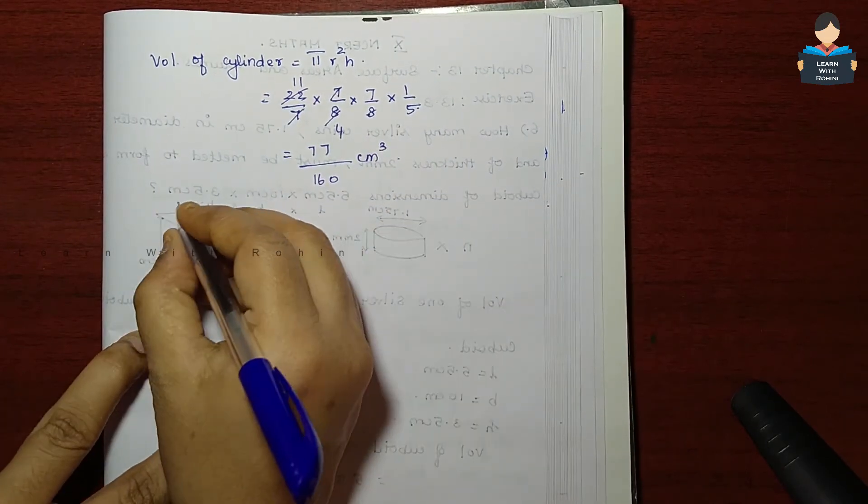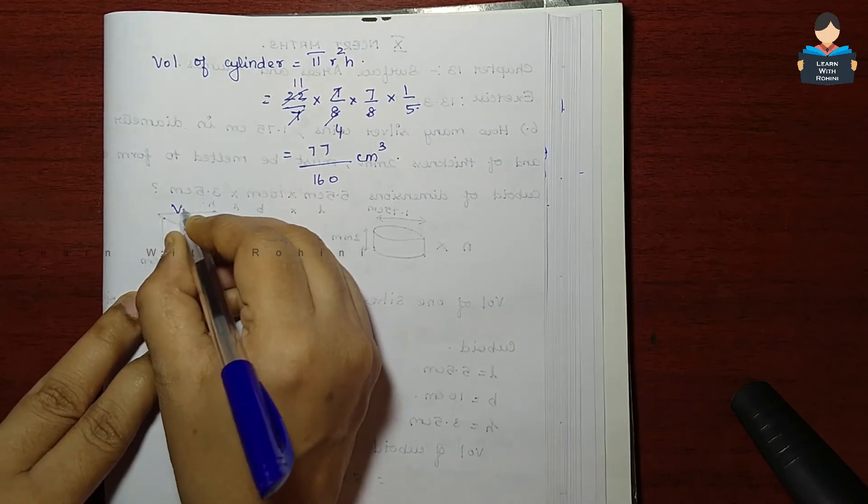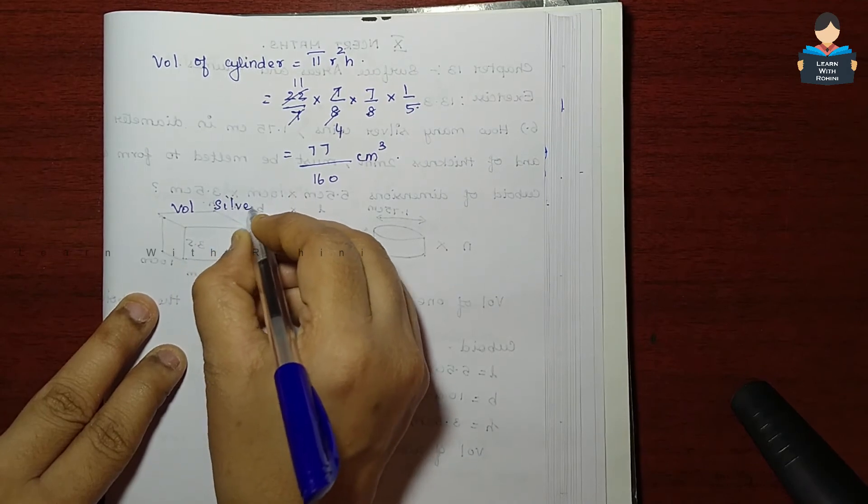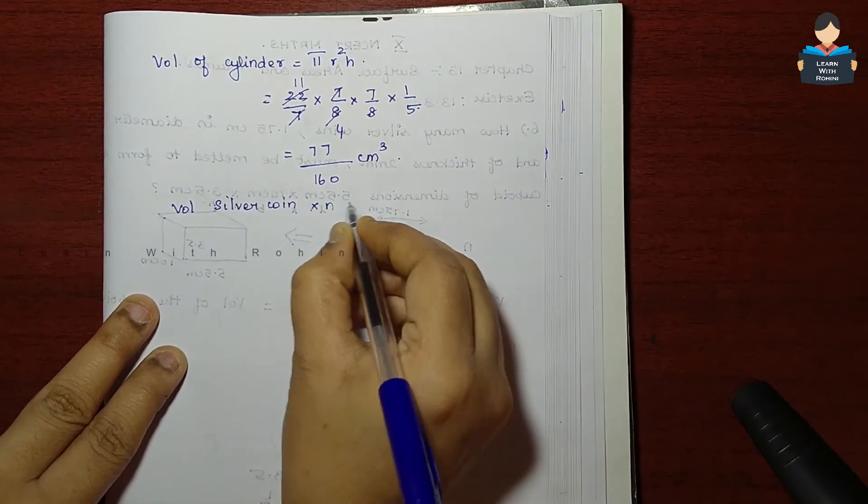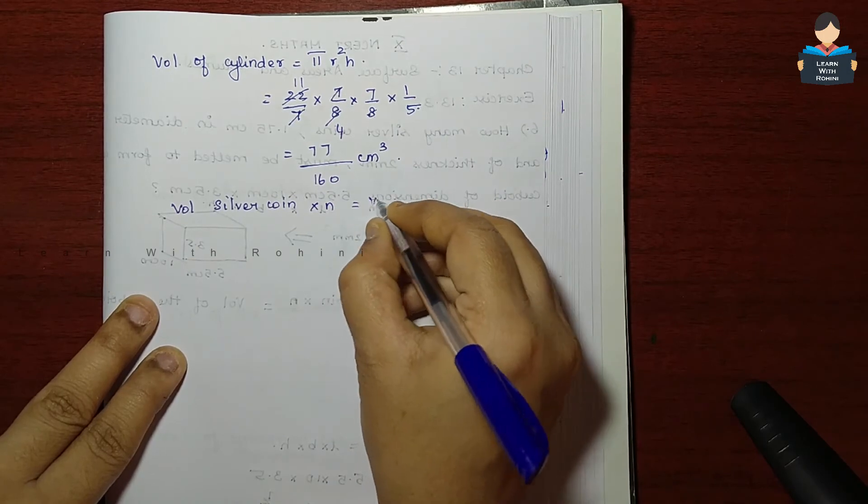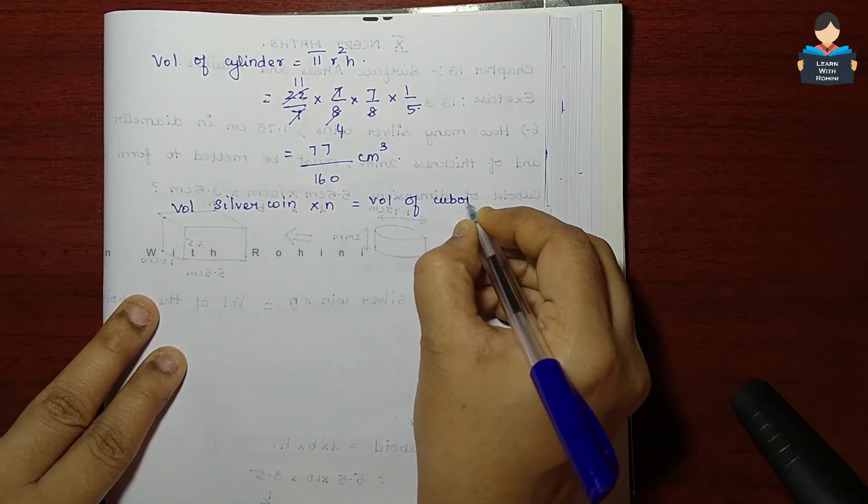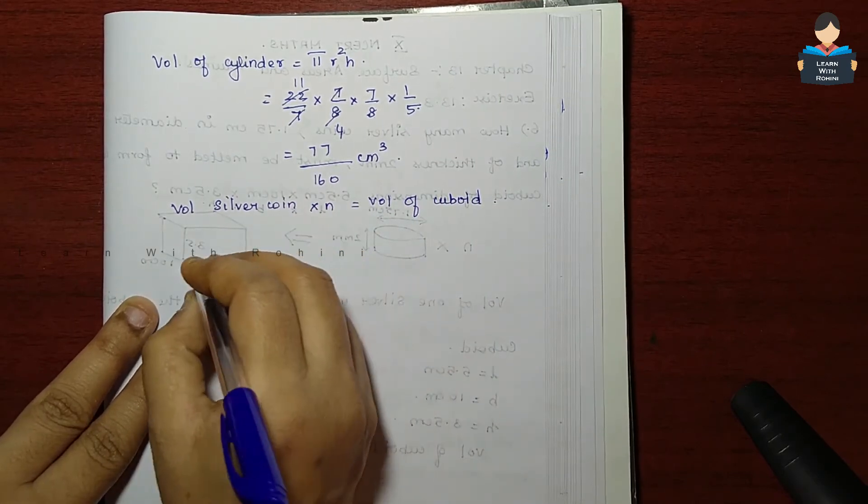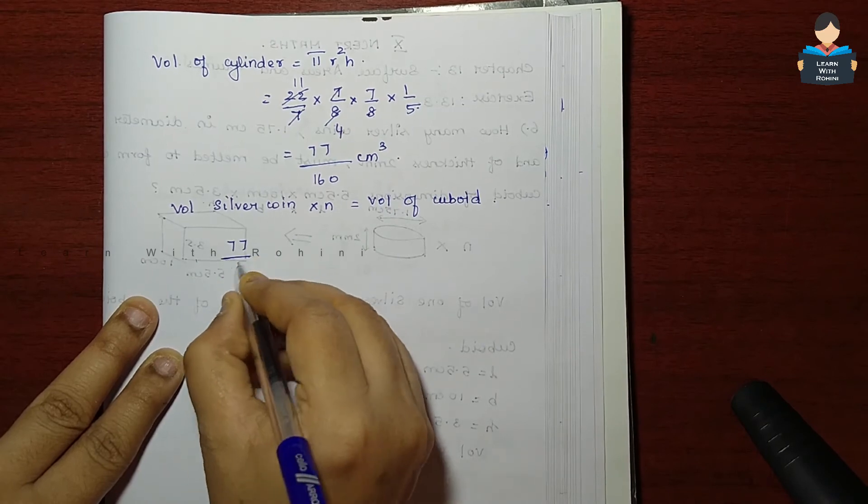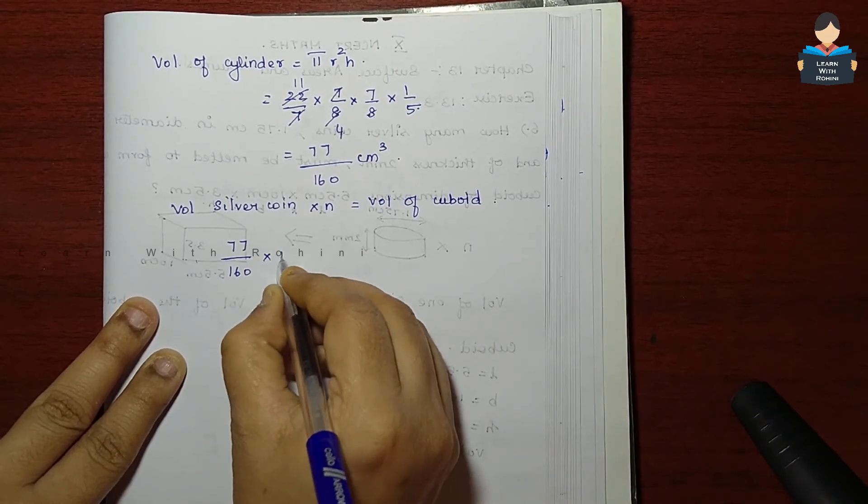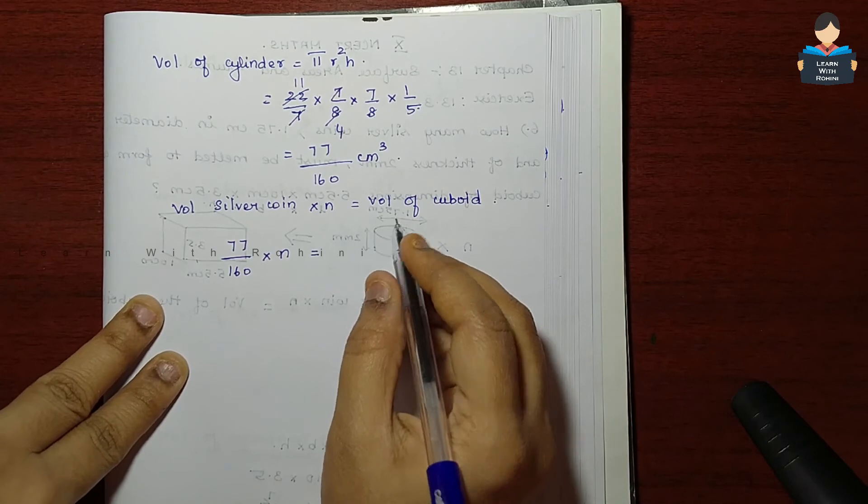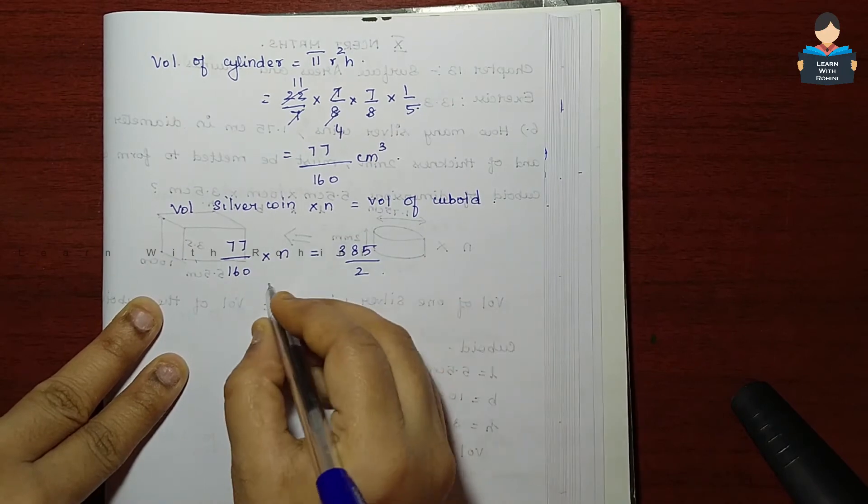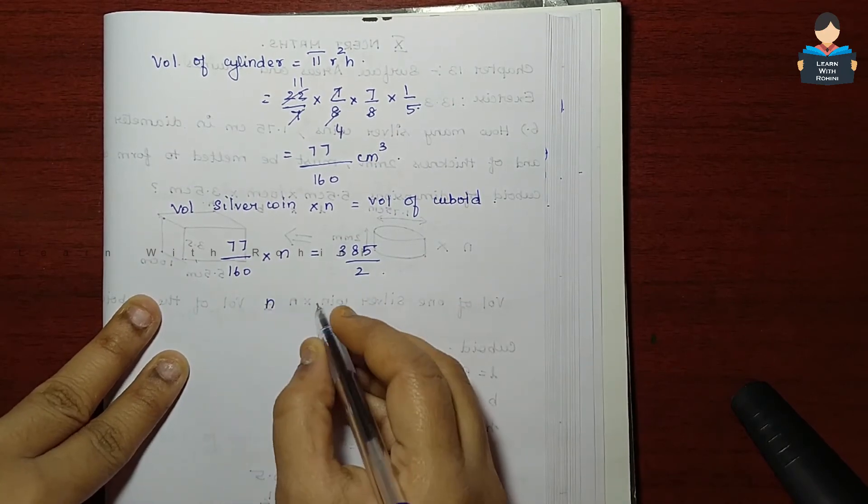Now what do we see? Volume of the silver coin into n equal to volume of cuboid. Volume of one silver coin is 77 by 160 into n equal to volume of cuboid is 385 by 2.